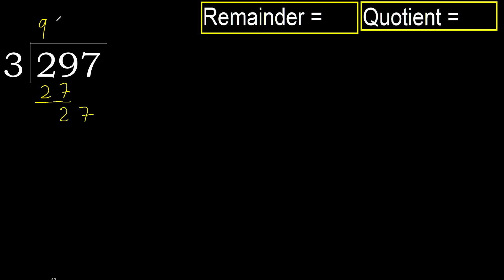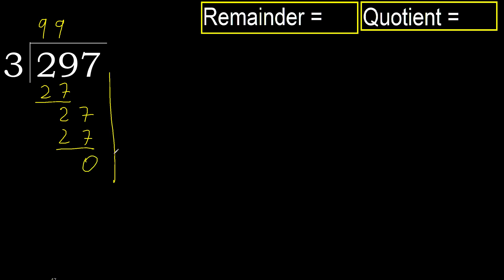27. 3 multiplied by 9 is 27, which is not greater. 27 minus 27 is 0. Next. That is not a number, therefore finish it.